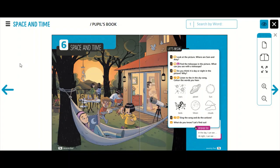Hello everybody! Today we are going to start a new unit, Unit number 6, Space and Time. So please, open your social science book on page number 74 and 75.